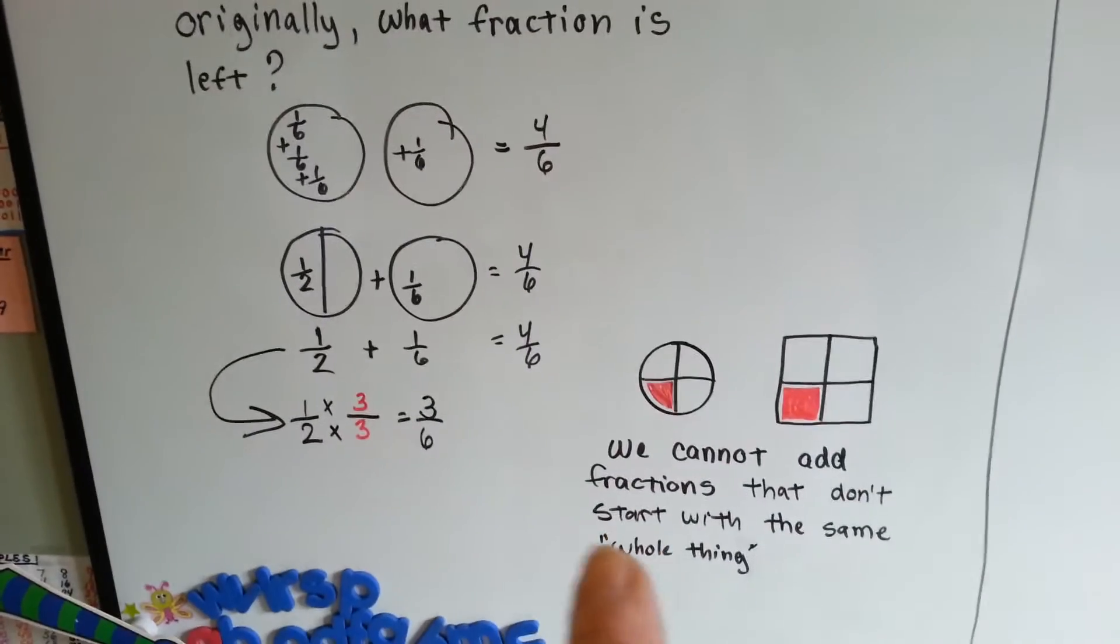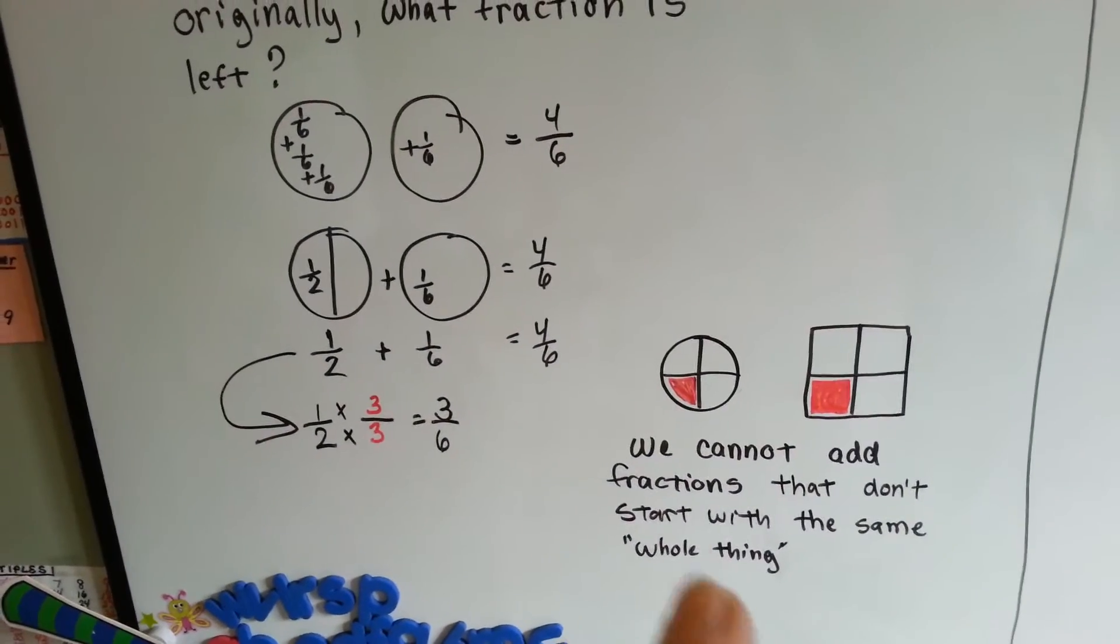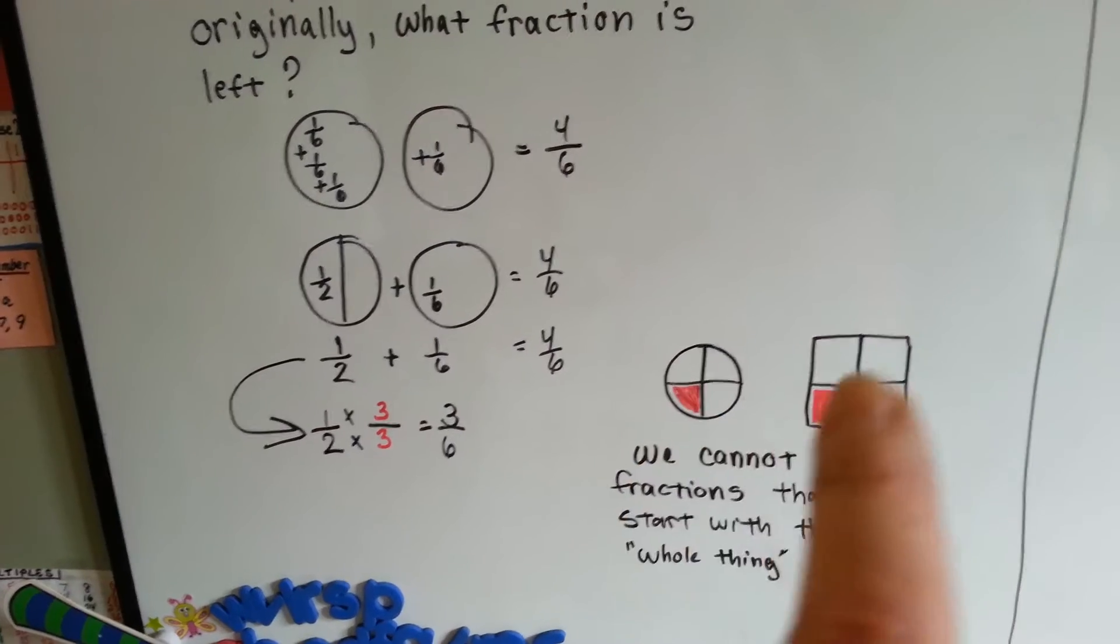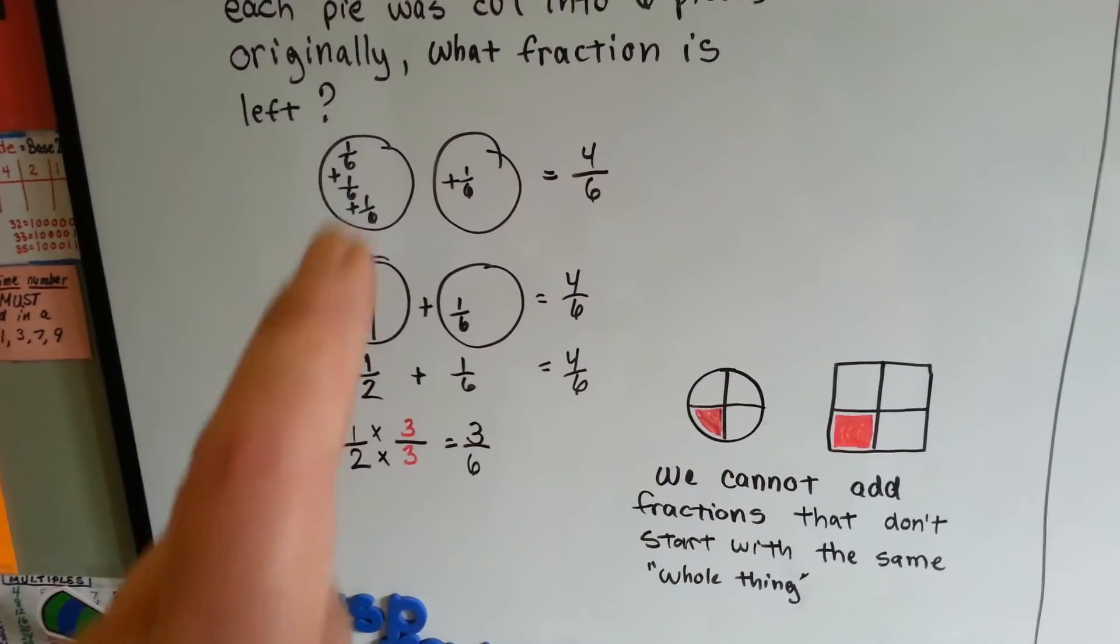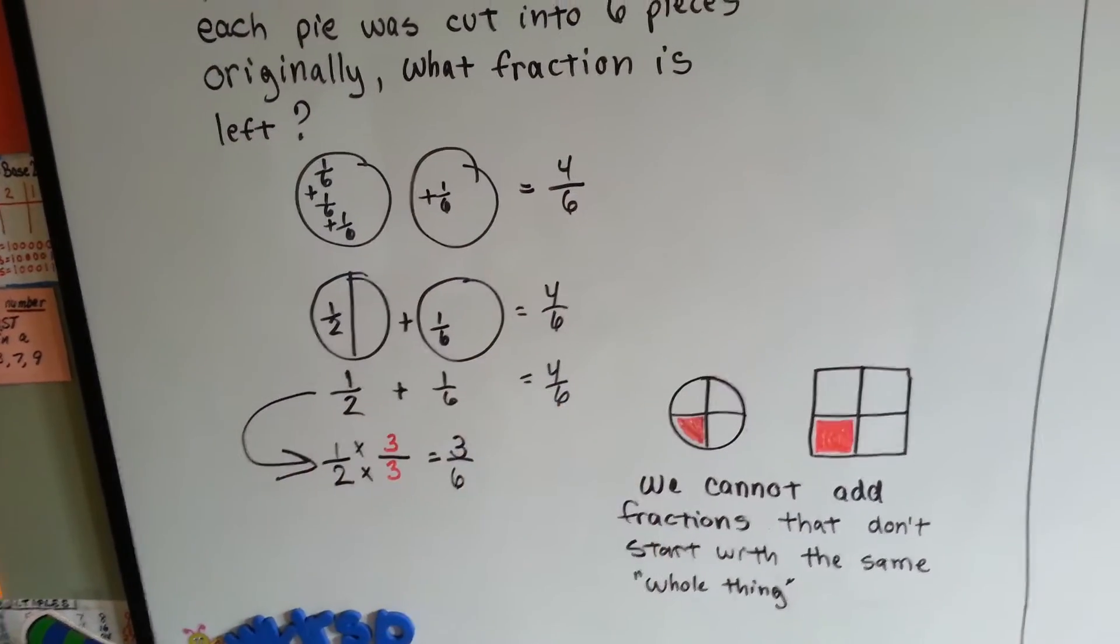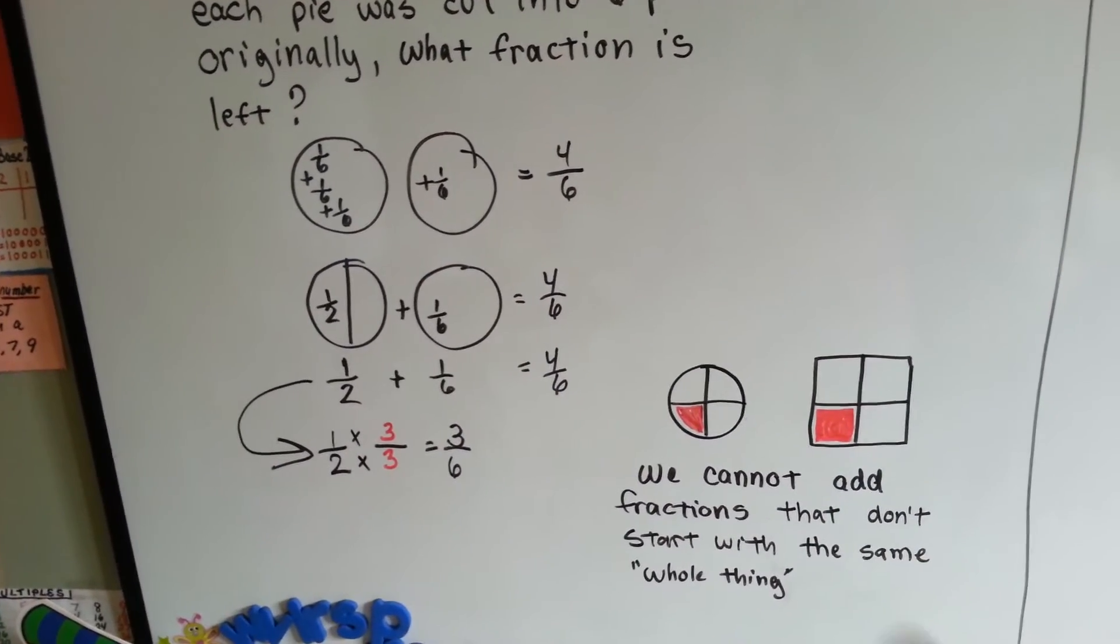Just remember, we cannot add fractions that don't start with the same whole thing. You can't start with a pie and add it to a cake. It wouldn't fit. You've got to have pie to a pie, circle to a circle. You have to add a triangle to a triangle, or a square to a square.